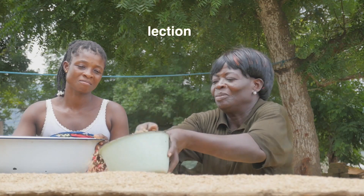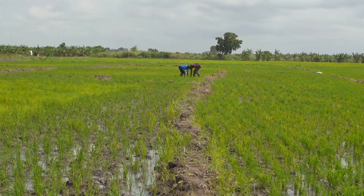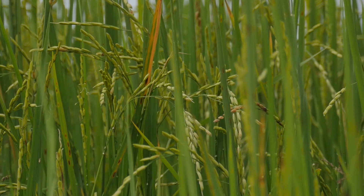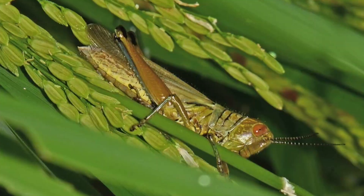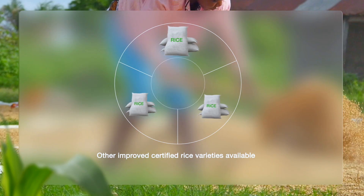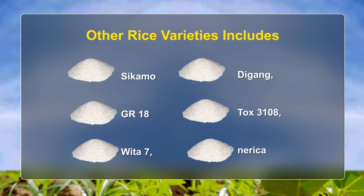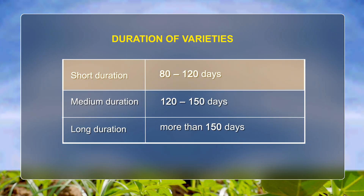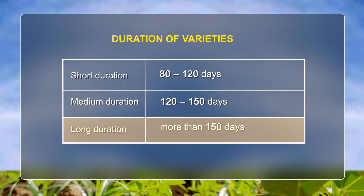Step 3: Seed Selection. It is important to advise farmers to plant improved certified varieties. Choose varieties recommended by researchers for a particular area. The variety of rice to be cultivated should have a high yielding potential, resistance to pests and diseases, and meet consumer tastes and preferences with good cooking quality. Varieties include Agra rice, Gewa or Jasmine 85, Amankwetia, Sikamu, GR 18, Wita 7, Digang, Tox 3108, and Nerika rice. Duration of varieties: short duration 80 to 120 days, medium duration 120 to 150 days, long duration more than 150 days.